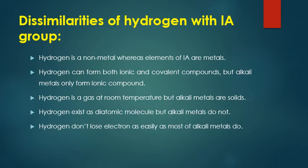Hydrogen exists as a diatomic molecule — H₂ — meaning two hydrogen atoms, whereas alkali metals (Li, Na, K) are monoatomic — they exist as single atoms. The fourth difference: hydrogen does not lose its electron easily; conditions must be applied to remove it. But alkali metals easily remove the one electron from their valence shell. So these are the similarities and dissimilarities of hydrogen with alkali metals.